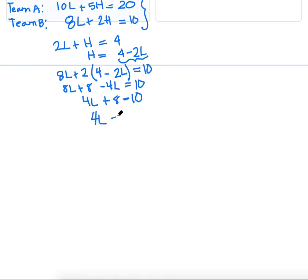Subtracting 8 from both sides gives us 4L equals 2, which will give us L equals 1 half.